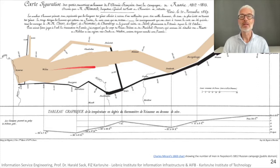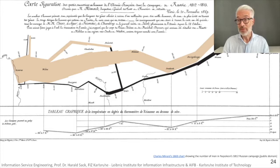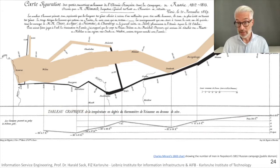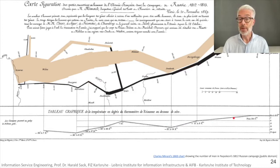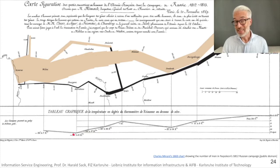You see the brown line getting thinner and thinner — the thickness indicates the size of Napoleon's army. At several stages — Vilna, Vitepsk, Smolensk — there were battles, and after battles the army gets smaller. They arrived in Moscow, then retreated when winter came. Down here is a temperature scale relating to the black line, which shows the retreat. The temperatures shown are in the Réaumur scale — minus 30 degrees Réaumur is below minus 30 Celsius — really, really cold. To answer why Napoleon was defeated, you simply put your data together, arrange it, analyze it, and draw conclusions.